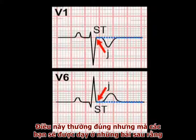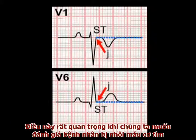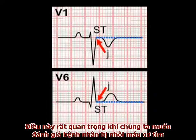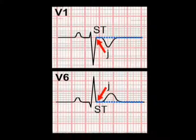This is generally true, but you will learn later in this course that there are normal ECG variants in which the S-T segment lies above the isoelectric line. This becomes very important when we go on to try and identify patients with myocardial infarctions, but that's for later.